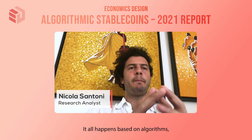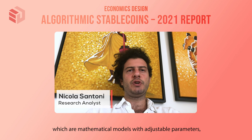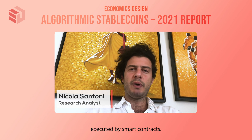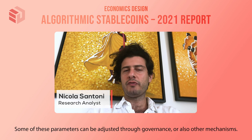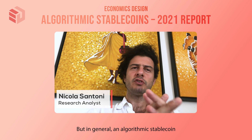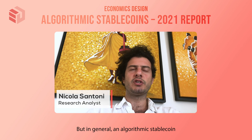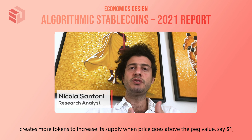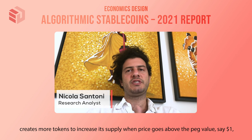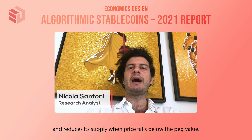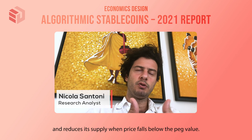It all happens based on algorithms, which are mathematical models with adjustable parameters executed by smart contracts. Some of these parameters can be adjusted through governance or other mechanisms, but in general an algorithmic stablecoin creates more tokens when price goes above the peg value — say $1 — and reduces its supply when price falls below the peg value.